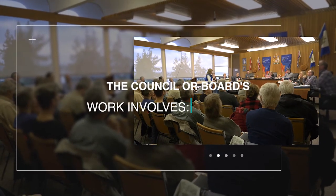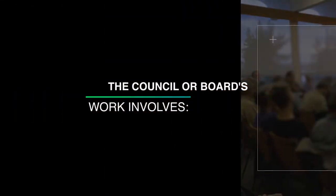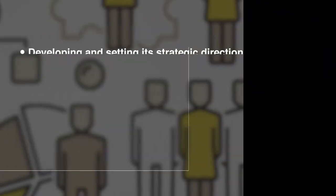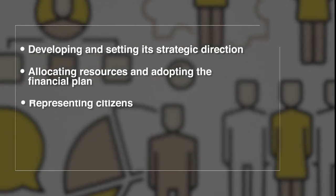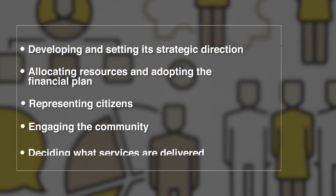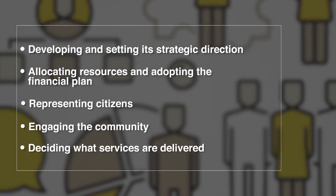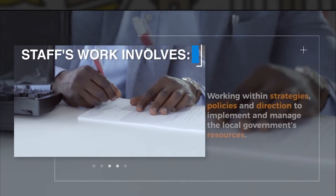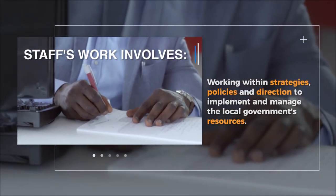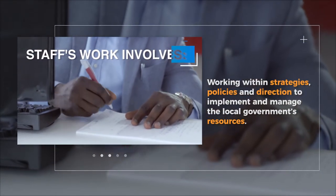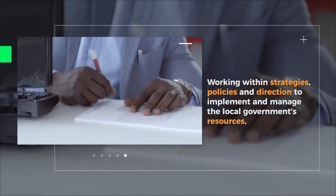The council or board's work involves developing and setting its strategic direction, allocating resources and adopting the financial plan, representing citizens, engaging the community, and deciding what services are delivered. Staff's work involves working within the council or board's strategies, policies, and direction to implement and manage the local government's resources.